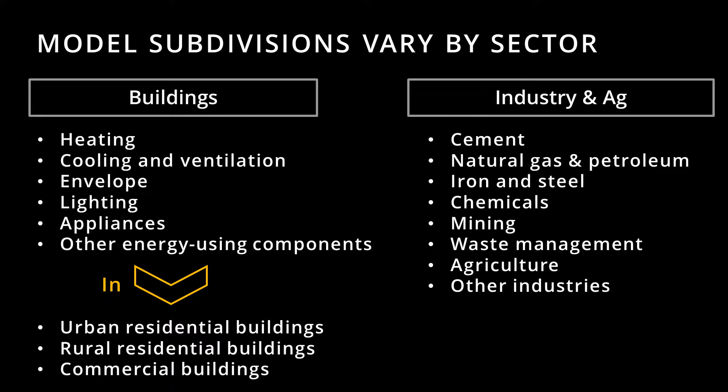Agriculture is treated as an industry. This section of the model handles fuel use by agricultural equipment, as well as process emissions, such as methane released from livestock operations. If land use is changing to support agriculture, those land use changes are handled in the land use sector of the EPS.